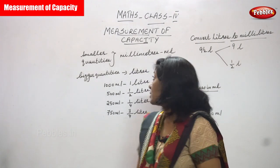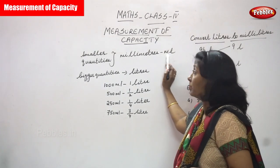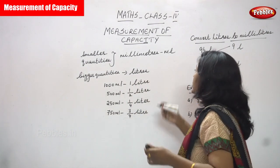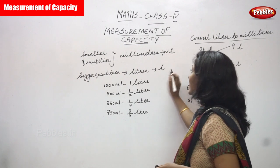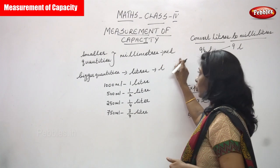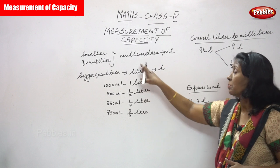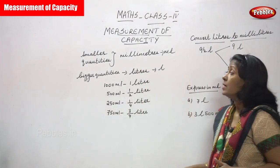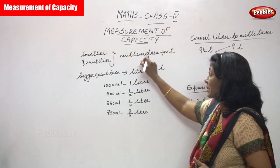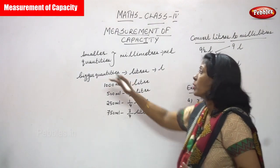Now, milliliters is written in short form as ml, and liters is written in short form as L. So ml means milliliter and L means liter. Smaller quantities are always measured in milliliters and bigger quantities are measured in liters.